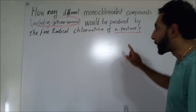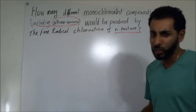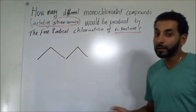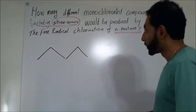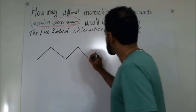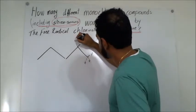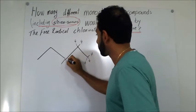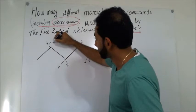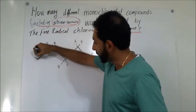Let's start by drawing the alkane. Pentane is a five-carbon chain. This is my alkane. I'll put all the hydrogens in this compound: three hydrogens on carbon 1, three hydrogens on carbon 5, two hydrogens on carbon 2, two hydrogens on carbon 4, and three hydrogens on carbon 3.